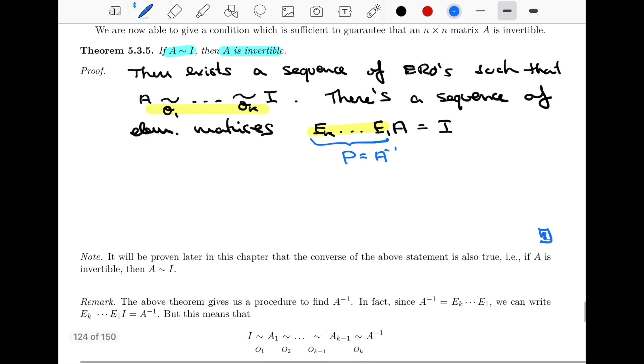And two little remarks that are very important. The first one is that, we're going to prove a little bit later, that the converse of the statement is also true. You know, the statement says A is rho equivalent to I means that A is invertible. Well, the converse of that will also be true, whereas that is that if A is invertible, then A is rho equivalent to I. Okay, we'll see that a little bit later.